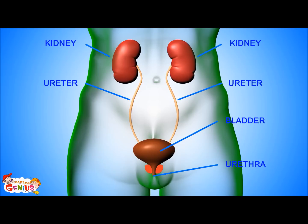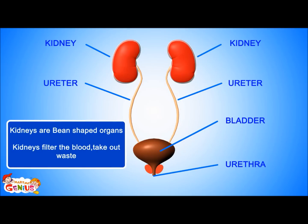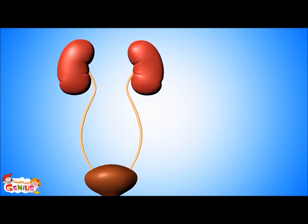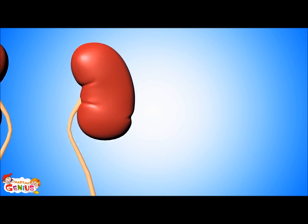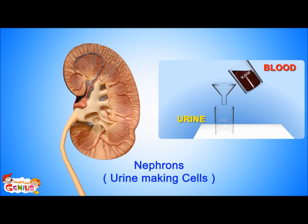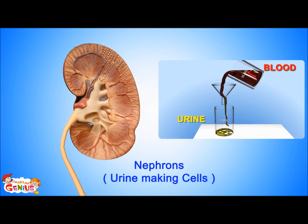The kidneys are two bean-shaped organs. All of the body's blood passes through them, and they filter the blood — waste liquid is changed into urine. The kidney is made up of several small cells called nephrons that are like small filters. They keep all the nutrients and good blood contained and convert waste into urine.